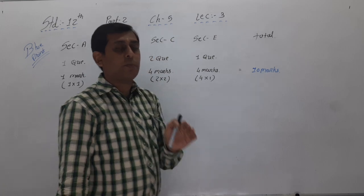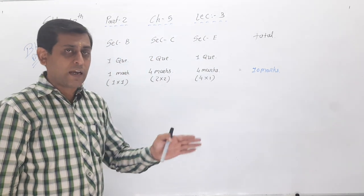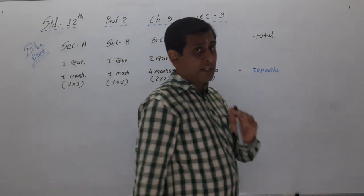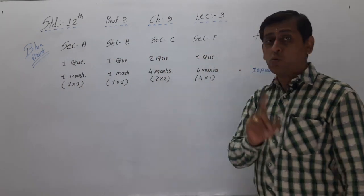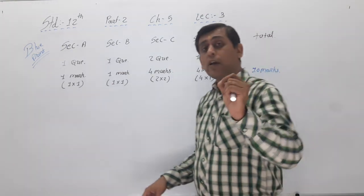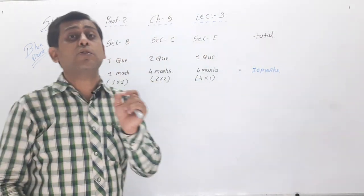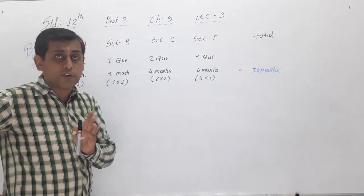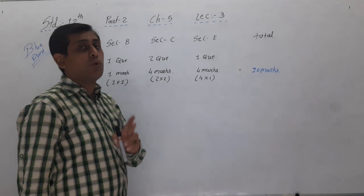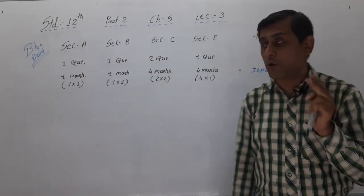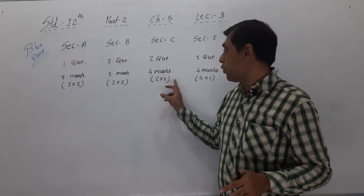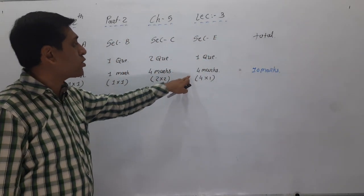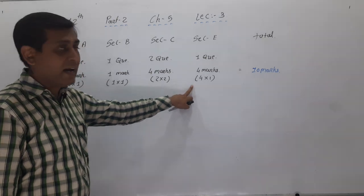Illustration numbers 7, 8, 9, and 10 are all short sums, that's why they will be asked for 2 marks each. In Section C, total 3 questions will be asked — 2 questions with an alternative — and you have to attempt 2 questions, so 2 questions for 2 marks each = 4 marks. The last section, Section E, 1 question for 4 marks will be asked.